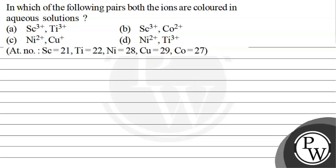Hello! Let's read this question: In which of the following pairs, both of the ions are colored in aqueous solutions? Option A: Sc³⁺, Ti³⁺. Option B: Sc³⁺, Co²⁺. Option C: Ni²⁺, Cu²⁺.